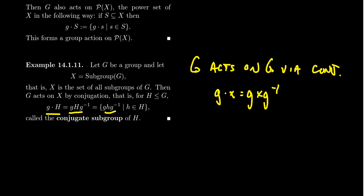It's important to point out that the conjugate of a subgroup is in fact a subgroup itself. It contains the identity because GEG inverse is just the identity. It's closed under multiplication because the product of two conjugates, so you have X and Y there, this simplifies to be GXYG inverse.